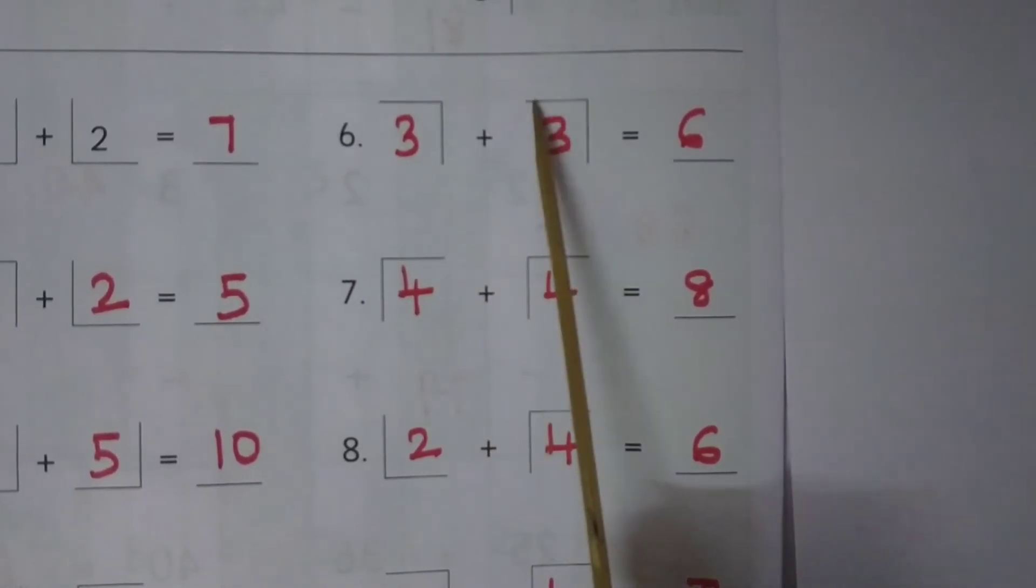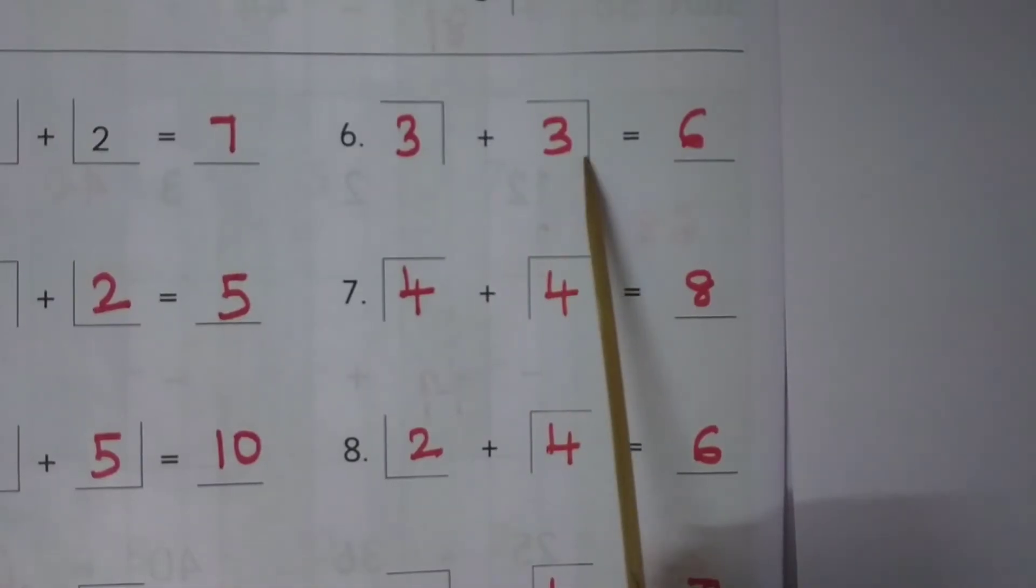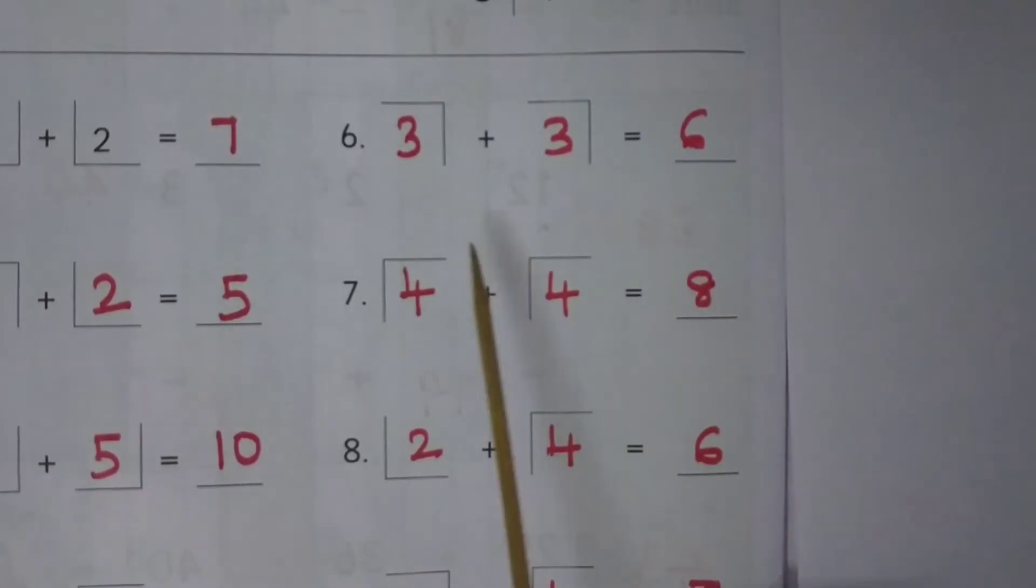3 plus 3 is equal to 6. 4 plus 4 is equal to 8.